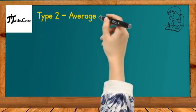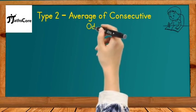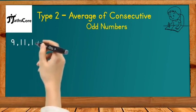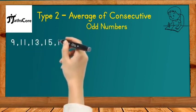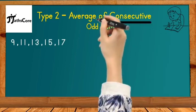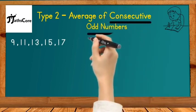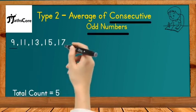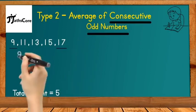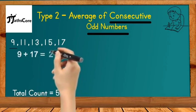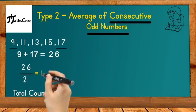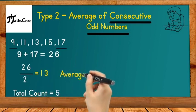Let us discuss Type 2, that is average of consecutive odd numbers. Here I have taken an example of consecutive odd numbers. First example is 9, 11, 13, 15, 17. You can see all numbers are consecutive odd numbers and exactly 5 numbers are given. Now according to the Vedic math concept, we need to add first and last number together. First number is 9 and last number is 17. 9 plus 17 is equal to 26, and 26 divided by 2 is equal to 13, which is the average of all these consecutive odd numbers.